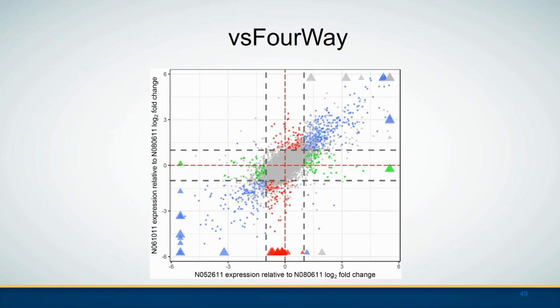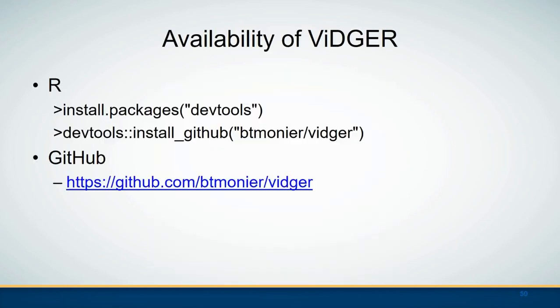Finally the four-way plot shows the log fold change for two pairwise comparisons. The WAGER package can be installed using those R codes, and more information can be found on the GitHub website of WAGER.